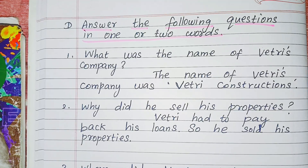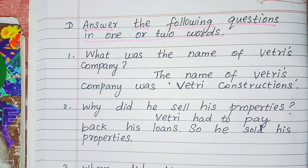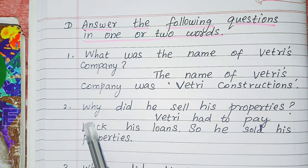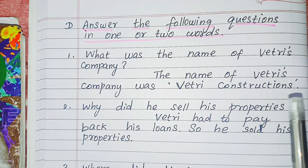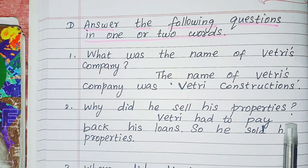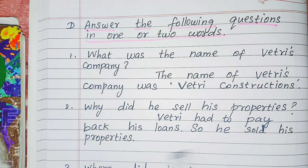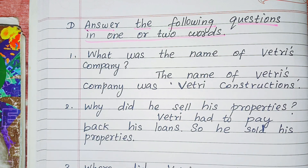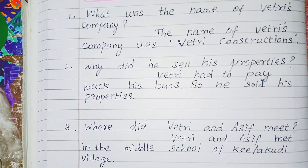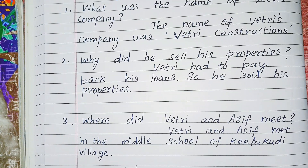Now answer the following questions in one or two words. First question: What was the name of Vettri's company? Answer: The name of Vettri's company was Vettri Constructions. Second one: Why did he sell his properties? Vettri had to pay back his loan, so he sold his properties.